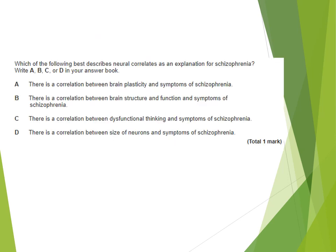If we look at a past paper question, this is assessing AO1. Which of the following best describes neural correlates as an explanation of schizophrenia — A, B, C or D? Write the answer in your answer booklet.